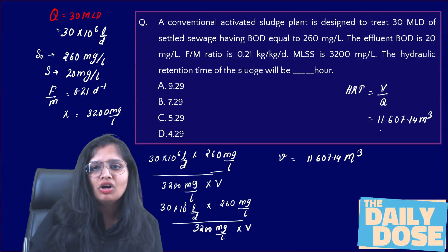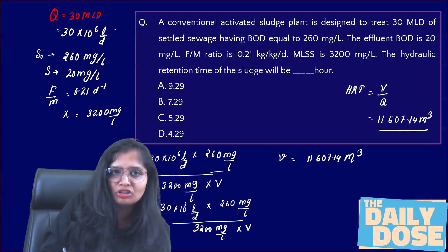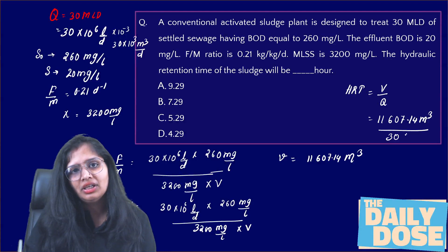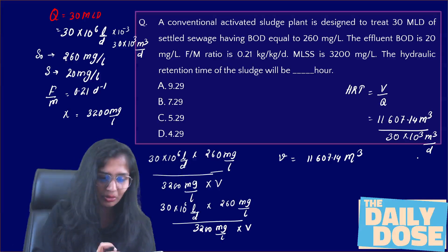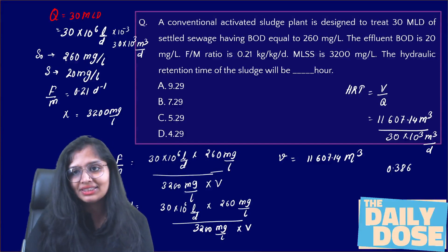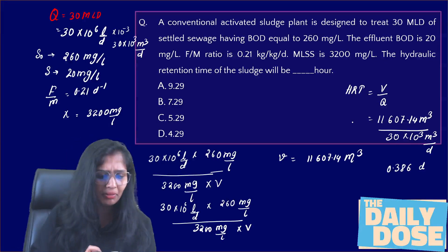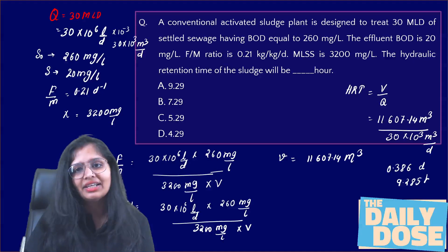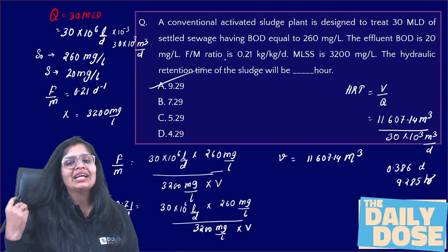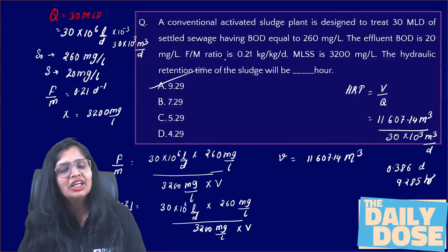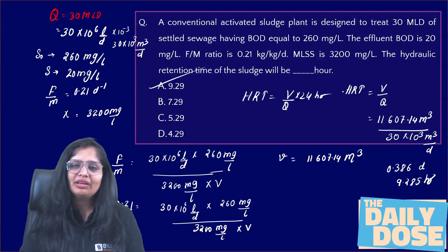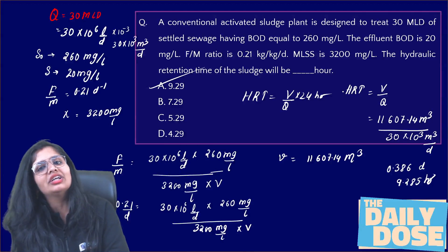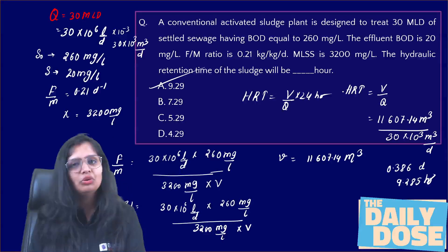Now the discharge is 30 × 10⁶ L/day, which equals 30 × 10³ m³/day. So HRT = Volume / Q = 11,607.14 / (30 × 10³) = 0.386 days. To convert to hours, multiply by 24, giving 9.285 hours, approximately 9.29 hours. In some books the formula is written directly as V/Q × 24 to get hours, since the day value is in decimals. So keep the formula V/Q × 24.